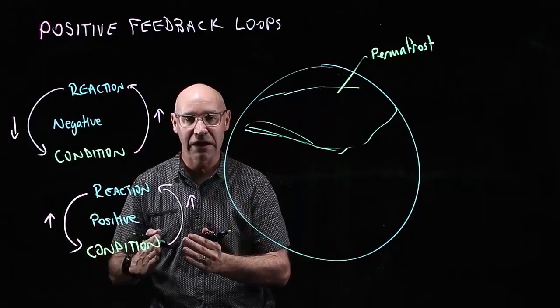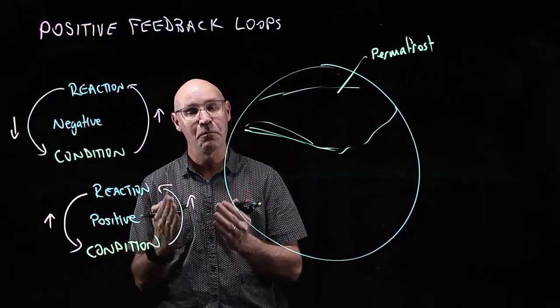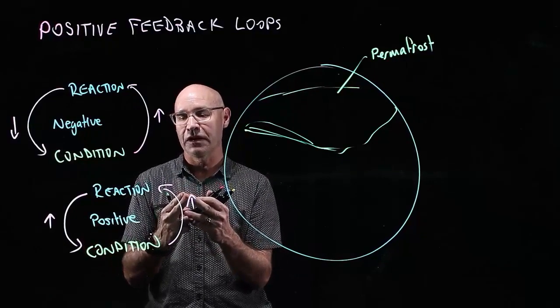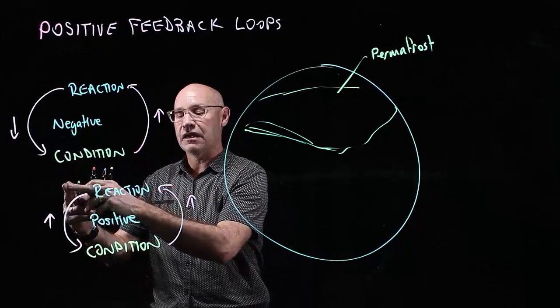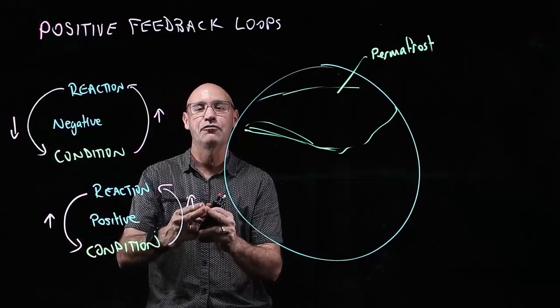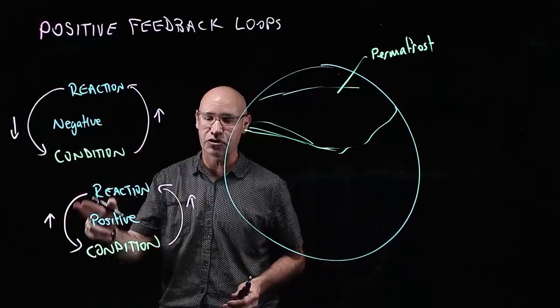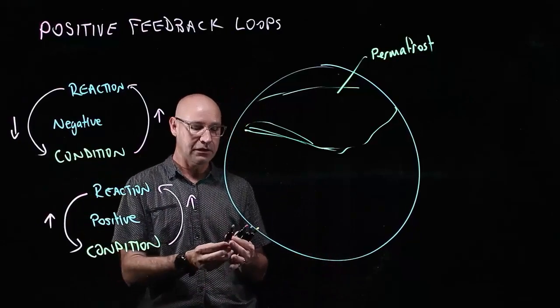So therefore, more bacteria decompose more of the permafrost, releasing more carbon dioxide into the atmosphere and increasing the temperature, defrosting more permafrost. Can you see how it just spins out of control? It's a positive feedback loop.